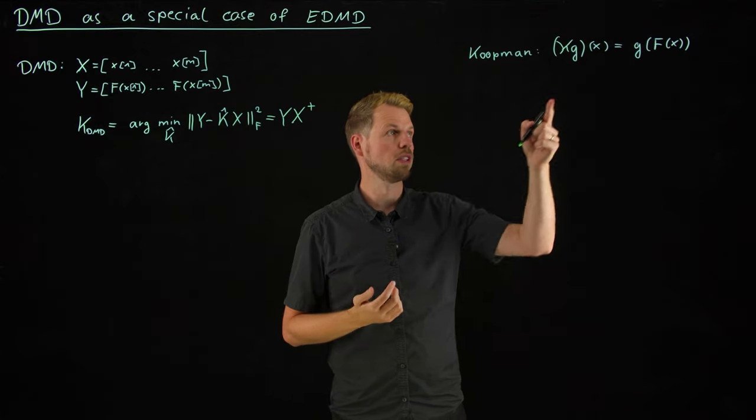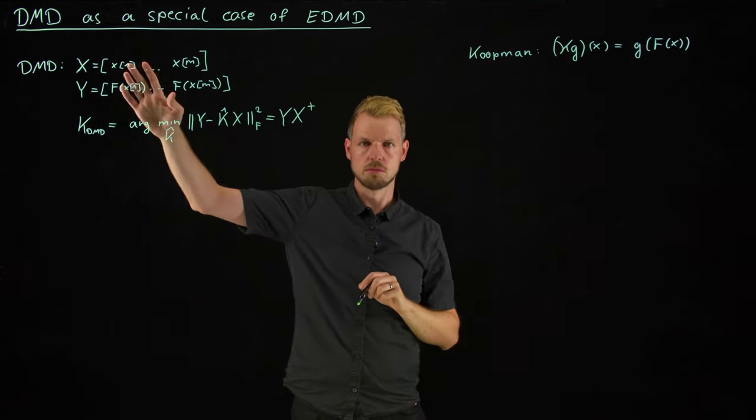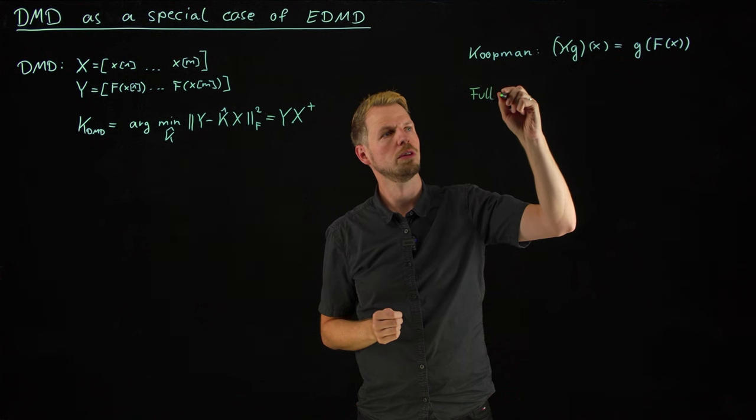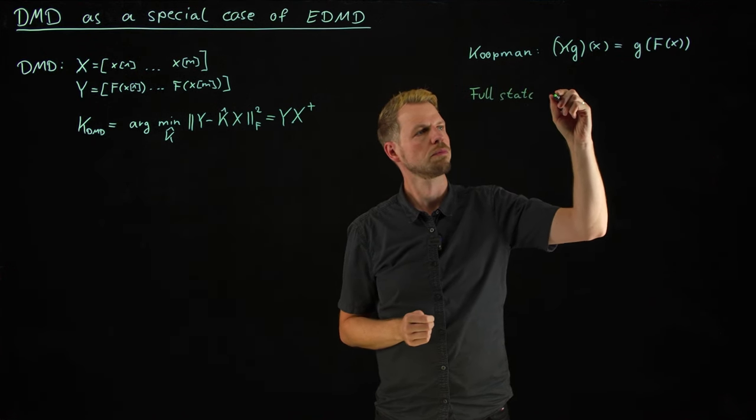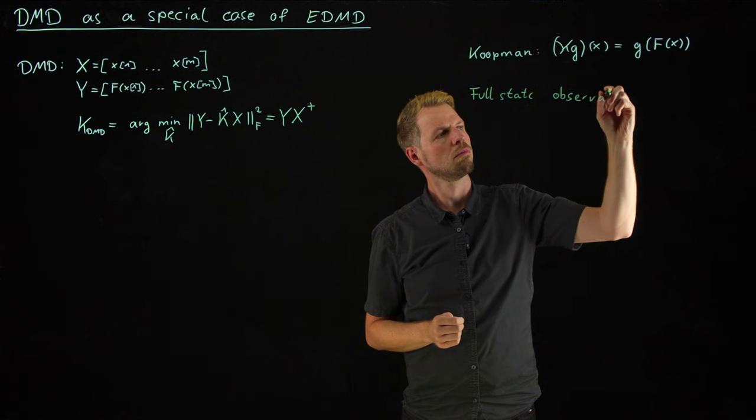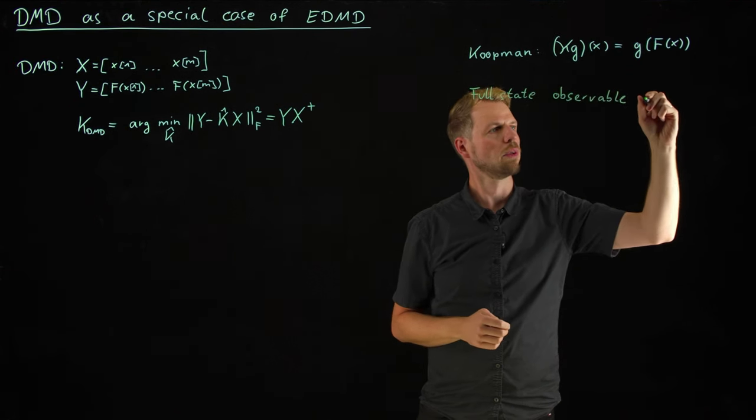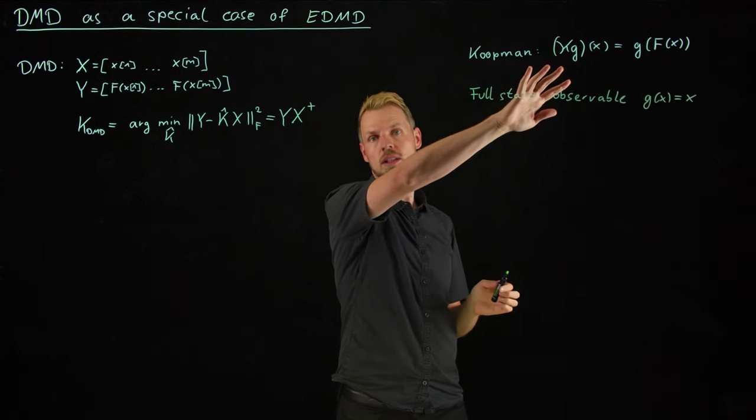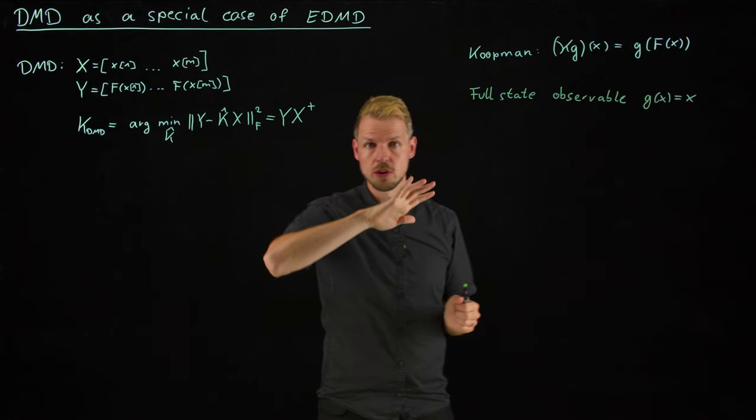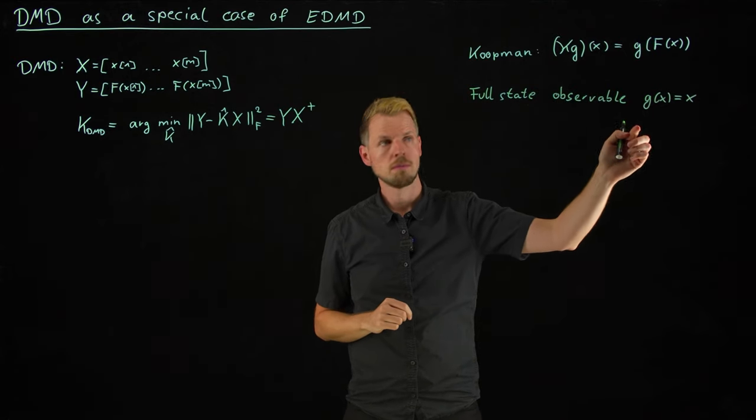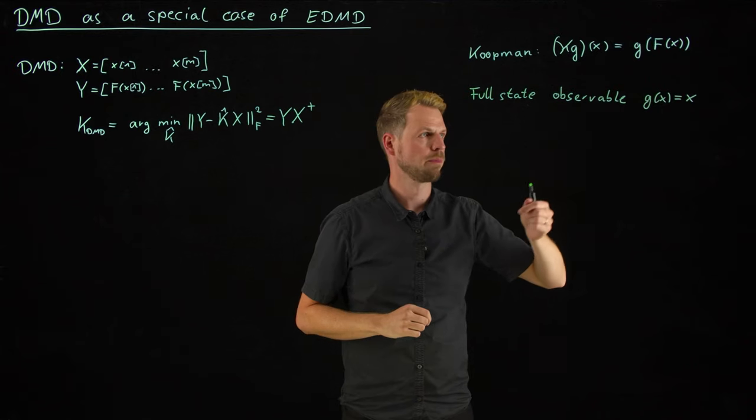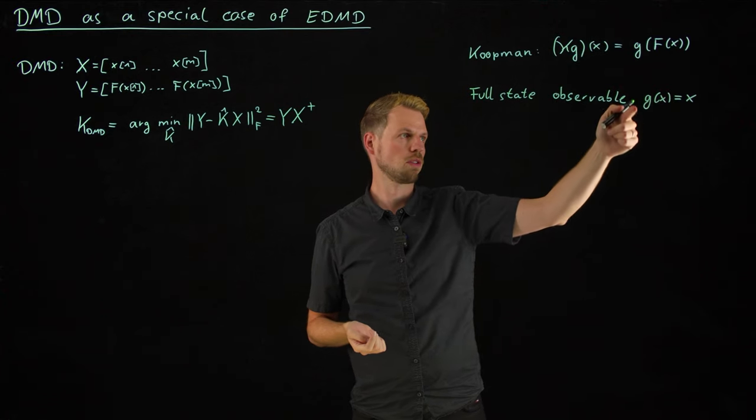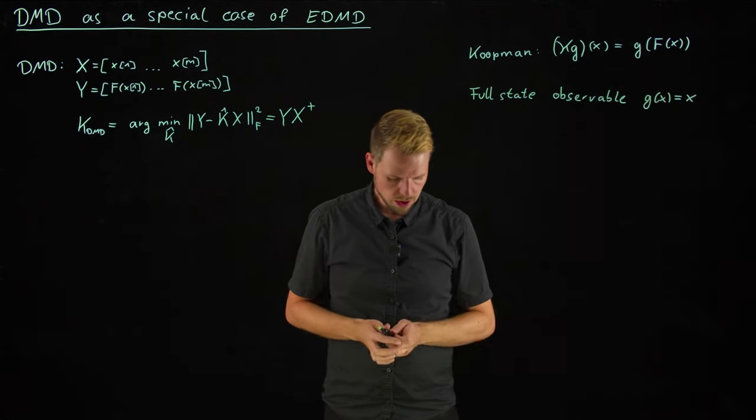So what we can consider is, first of all, we study snapshots from our state here. So first step is simply to define what is known as the full state observable. So what we're going to say is g of x is simply x. So this does not mean that the Koopman operator here is already a matrix because it still acts on a function, but it's the identity mapping function. This does not change a thing. This is still an infinite dimension operator acting on a function space.